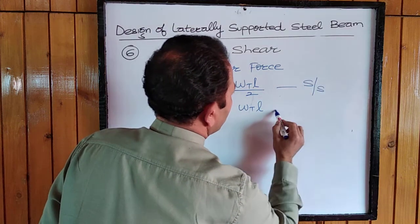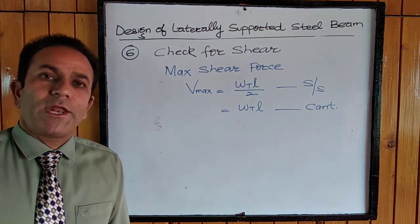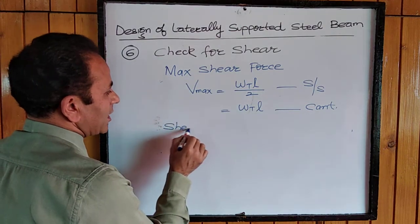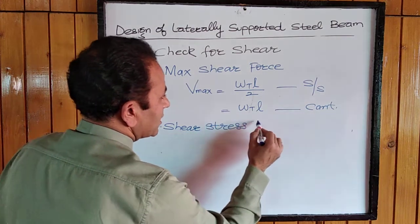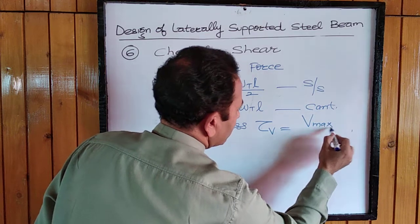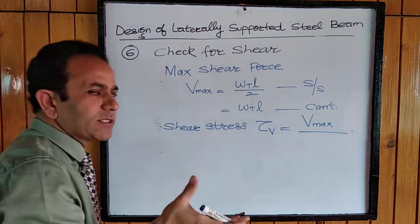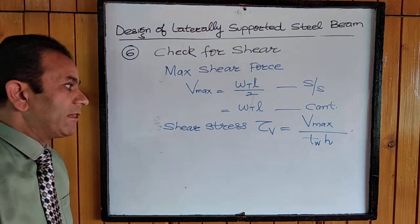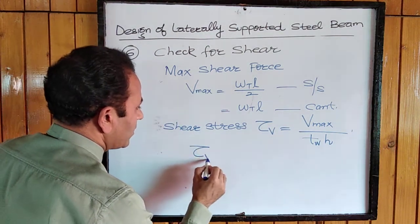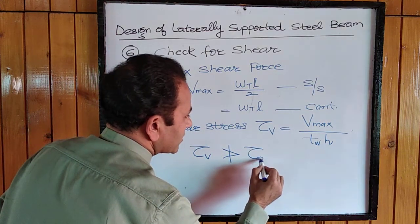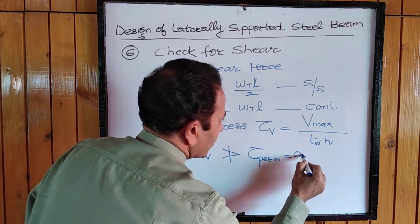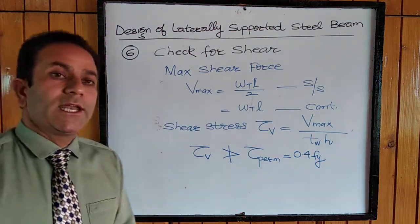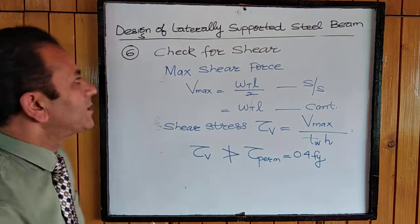For a cantilever beam, the maximum shear equals the total load times l. We then calculate the average shear stress tau v as V max divided by the resisting area of the beam — that is, thickness of web times depth h of the web. This tau v shall not exceed the permissible shear stress, which is 0.4 times fy. If it exceeds, we revise the section; if within limits, it is safe in shear.